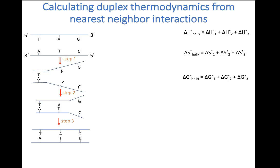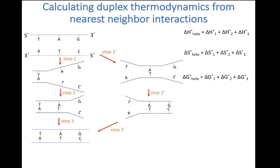These values for the individual steps are something that we can look up in the scientific literature. Using those literature values, we can calculate the free energy, enthalpy, and entropy of helix formation. This is just one of multiple pathways we could have chosen — for example, we could assume that the base pair in the center formed first, followed by the base pair on the right, and then the base pair on the left. No matter which of these pathways we chose, if we added up the values for the changes in these parameters for the individual steps, we would discover that they always sum up to the same value, owing to the fact that these are state functions.